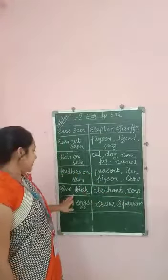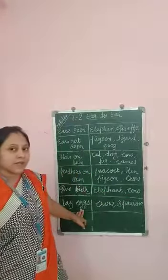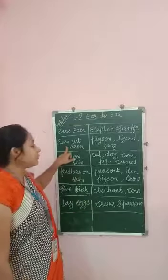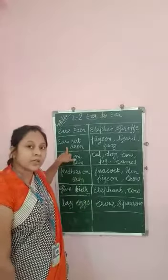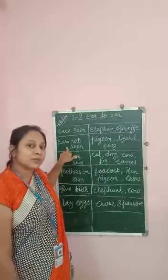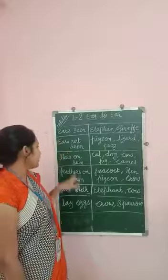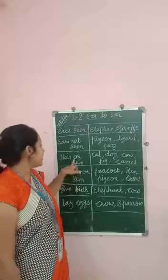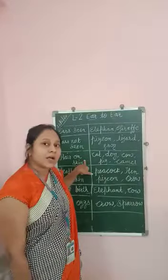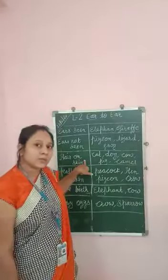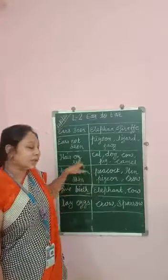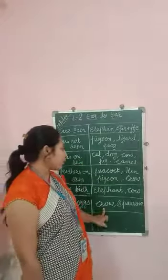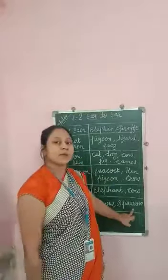Then lay eggs. The animals who do not have ears visible from the outside of their body, who have feathers and do not have hair on the outside of their body, they can lay eggs. For example, crow and sparrow.